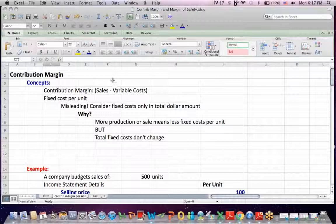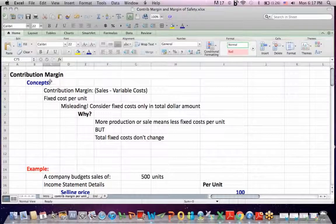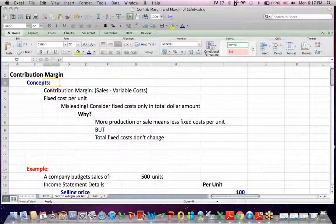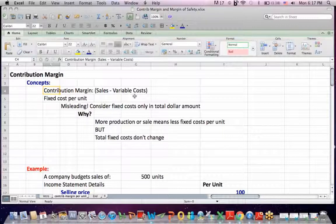I want to first define contribution margin. It's very common in cost accounting. So contribution margin, first of all, is defined as sales less variable costs.